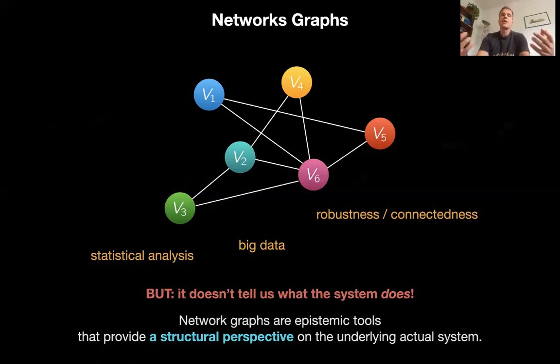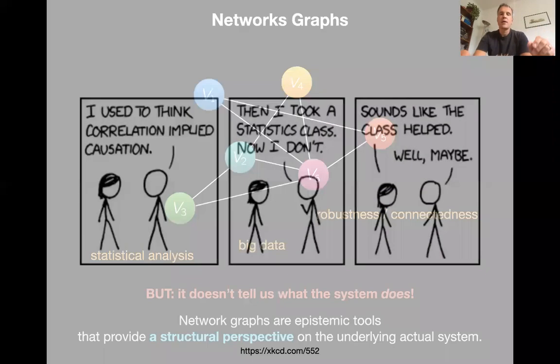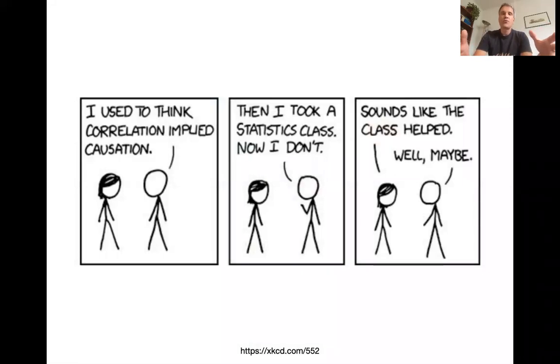But what these methods don't do is they don't tell you what the system does. Remember, this is what we set out to explain in the first place. I said much earlier that there are real systems out there. They're patterned processes. And we want to understand why are these patterned processes happening and how are they happening? This is a different thing from what network analysis does.